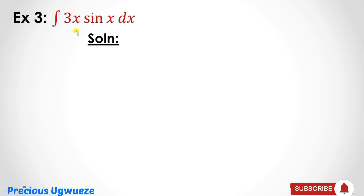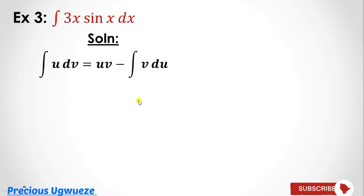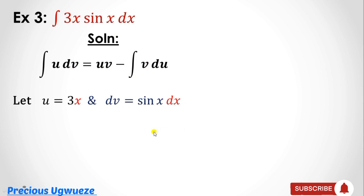Example 3: integrate 3x·sin(x) with respect to x. State your formula — the formula always guides what you are looking for, since everything corresponds to it. From here we choose u = 3x. Either term could be chosen as u and you would still get the solution.